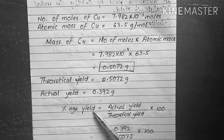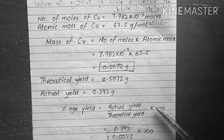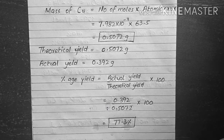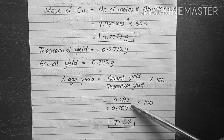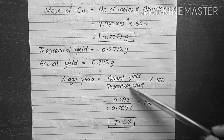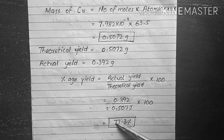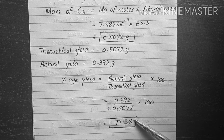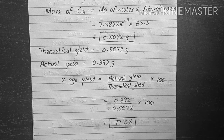The formula for percentage yield is: actual yield divided by theoretical yield, multiplied by 100. The actual yield is 0.392 grams, and the theoretical yield is 0.5072 grams. So the percentage yield equals (0.392 / 0.5072) × 100 = 77.3%. Always remember to include the percent sign, as this is the desired answer for the question.